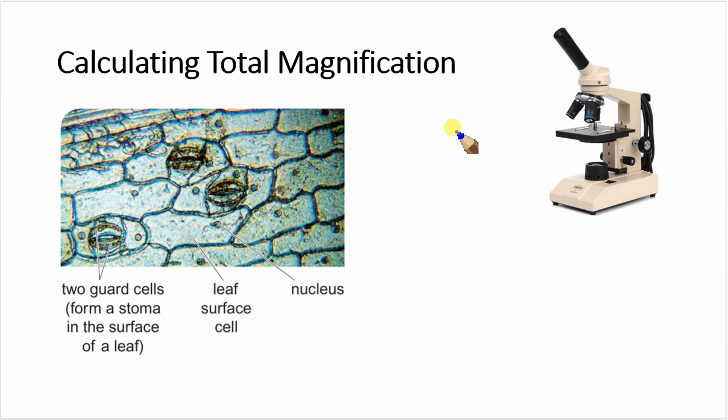In this example, our specimen is placed on a glass slide and magnified using the microscope. Here we're looking at the surface of a leaf, and we can see the individual cells.